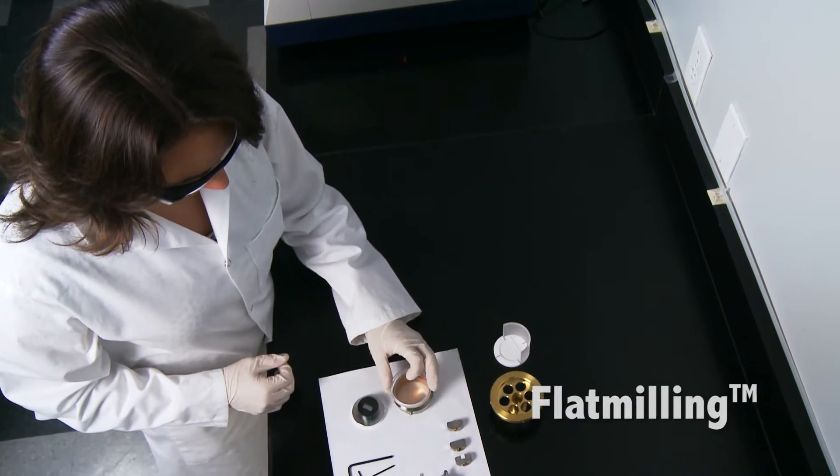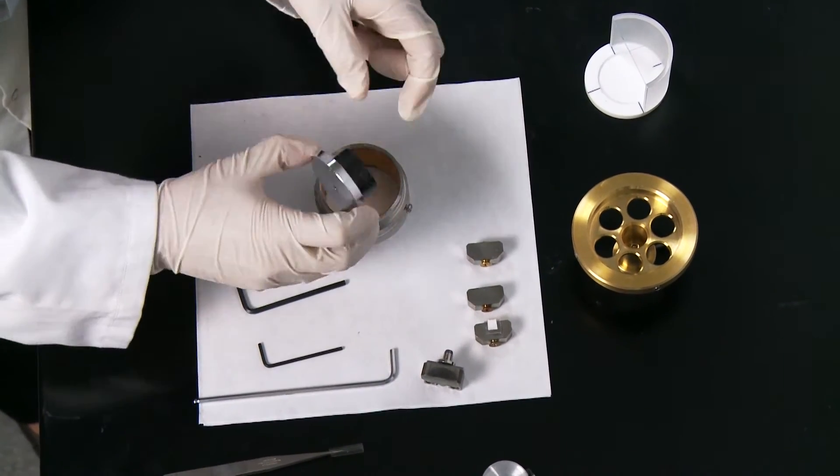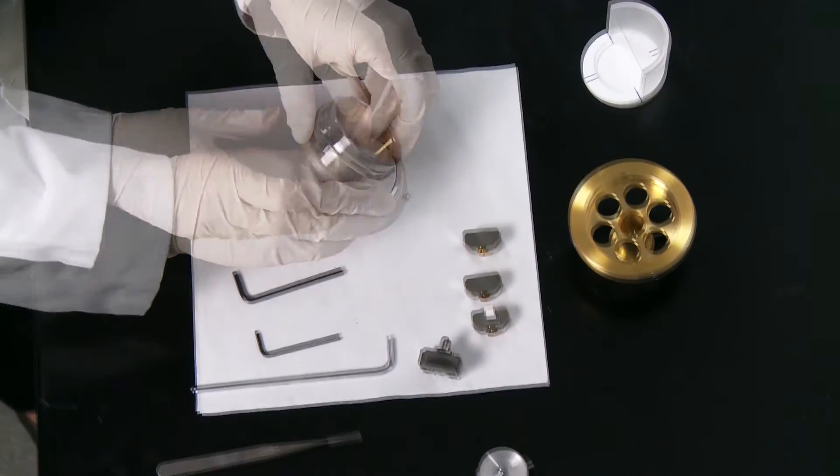Cross section and flat milling can be performed on the same holder to be used for scanning electron microscopy. After milling, the sample holder can be placed directly into the SEM for analysis.